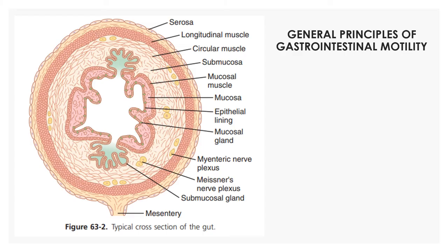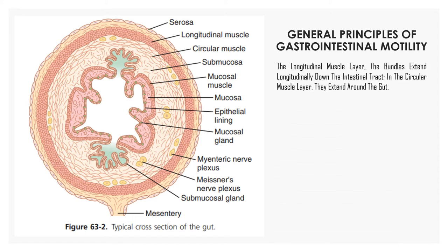Next is the general principle of gastrointestinal motility. We are going to look at the cross-section of the intestinal wall. The intestinal wall contains the following layers: serosa, longitudinal smooth muscle layer, circular smooth muscle layer, and submucosa and the mucosal layer. The longitudinal muscle layer bundles extend longitudinally down the intestinal tract, while in the circular muscular layer they extend around the gut.